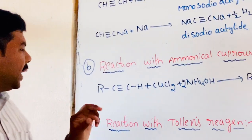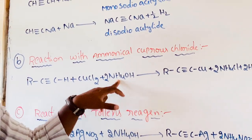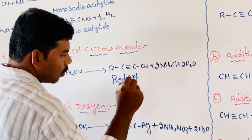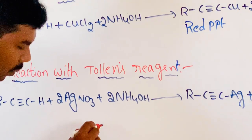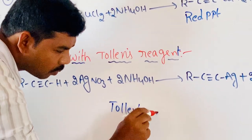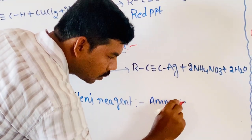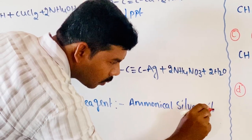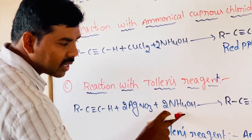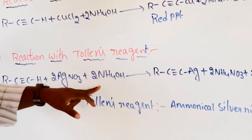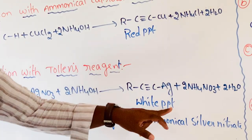Reaction with ammoniacal cuprous chloride: alkynes react with cuprous chloride and ammonium hydroxide to give a red precipitate of alkynes and ammonium chloride water. Next reaction is Tollens' reagent. Ammoniacal silver nitrate is called Tollens' reagent. The mixture of silver nitrate and ammonium hydroxide is called ammoniacal silver nitrate. Alkynes reacting with Tollens' reagent give a white precipitate of alkynes.